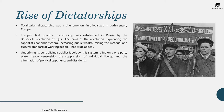Another major development during the interwar period was the rise of dictatorships across Europe. Totalitarian dictatorship was a phenomenon first localized in 20th-century Europe. Europe's first practical dictatorship was established in Russia by the Bolshevik revolution in 1917, which led to the widespread spread of communism and the USSR, with Stalin as its chief leader. The aims of this revolution — liquidating the capitalist economic system, increasing public wealth, and raising the material and cultural standard of working people — had wide appeal. This system relied on a one-party state, heavy censorship, the suppression of individual liberty and the elimination of political opponents and dissidents.